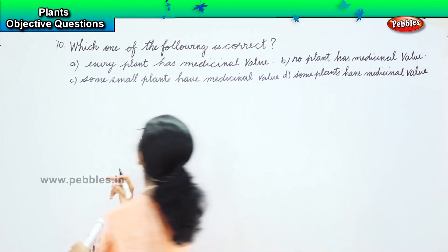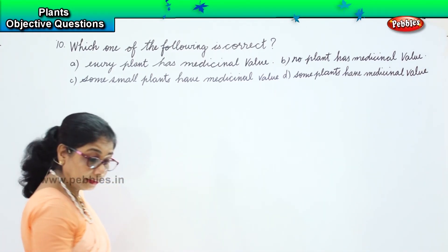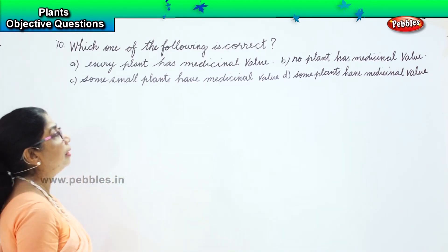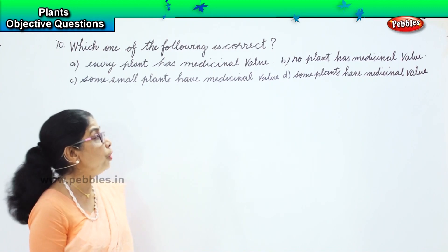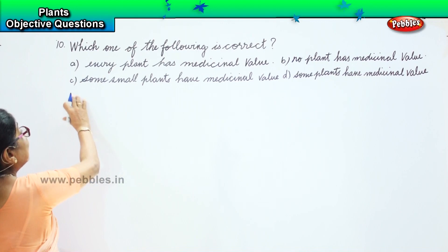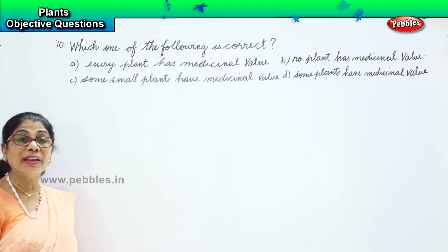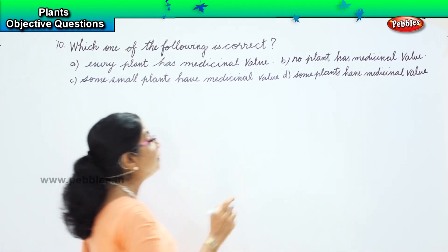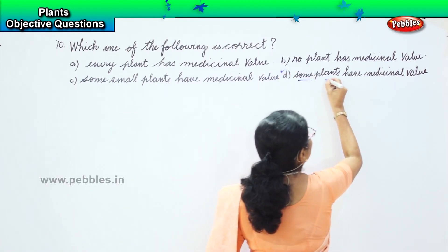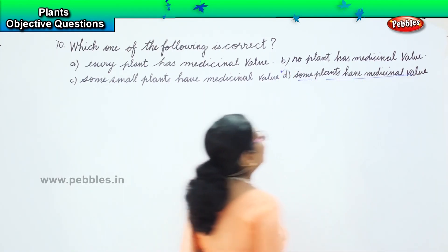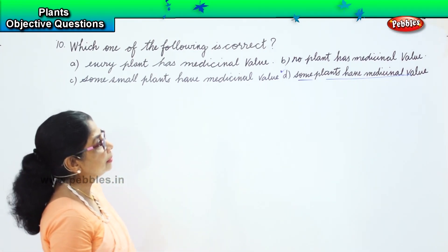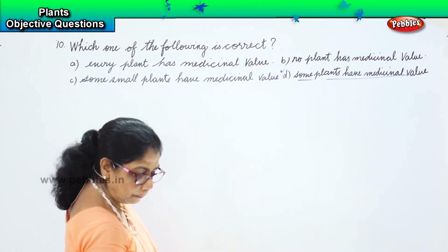Now, which of the following is correct? Option A - every plant has medicinal value: no. Option B - no plant has medicinal value: no. Option C - some small plants: no. Option D is correct: only some plants have medicinal value.